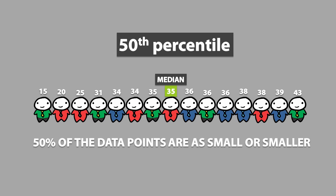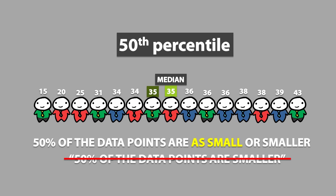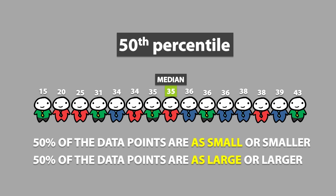It is important that you include the 'as small' part of the sentence because to the left of the median, we see another number that is equal to the value of the median. If I had only said that 50% of the data points are smaller, then this would be wrong because 35 is obviously not smaller than 35. In contrast, we can say that the 50th percentile also refers to 50% of the data points being as large or larger.